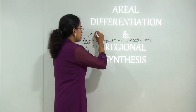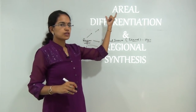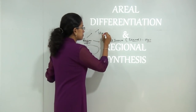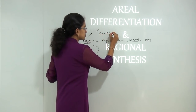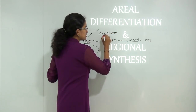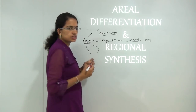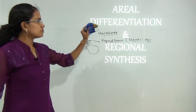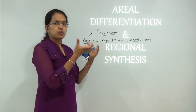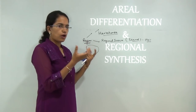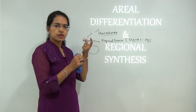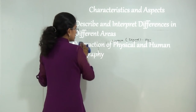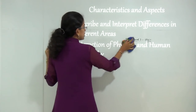This region was defined in various ways. The first one of which was aerial differentiation. Aerial differentiation was propounded by Richard Hartshorne in his book Nature of Geography, and the main objective of aerial differentiation, as the word denotes, was to differentiate various areas. Finding out the differences in the different areas was the main aim of area differentiation.